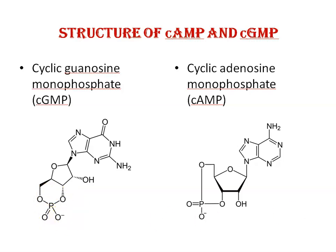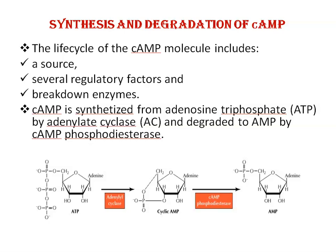cAMP and cGMP are currently the most well-documented cyclic nucleotides. The life cycle of a cAMP molecule includes a source, several degradative factors, and breakdown enzymes. cAMP is synthesized from adenosine triphosphate, ATP, with the help of the enzyme adenylyl cyclase. Adenylyl cyclases are transmembrane enzymes regulated by G-protein coupled receptors. cAMP is then degraded to AMP, adenosine monophosphate, by the enzyme cAMP phosphodiesterase.